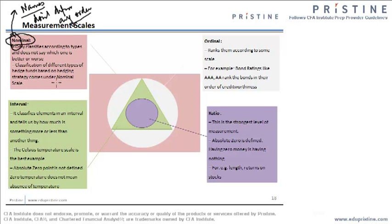From the finance industry, suppose a particular fund is having different strategies or different names — those names will come under this nominal scale. The second one is the ordinal scale.